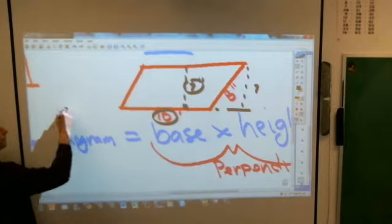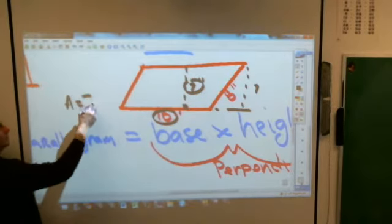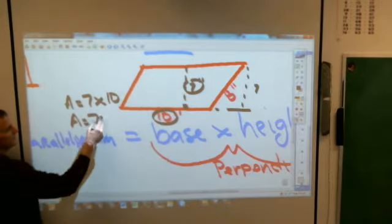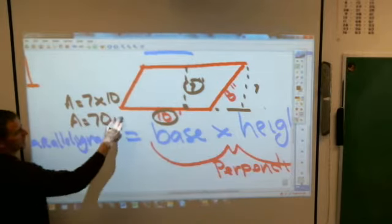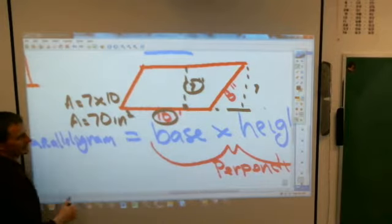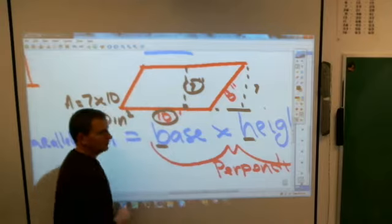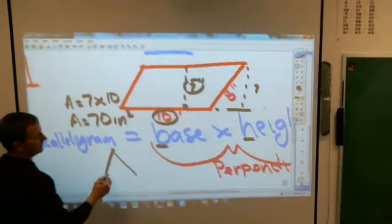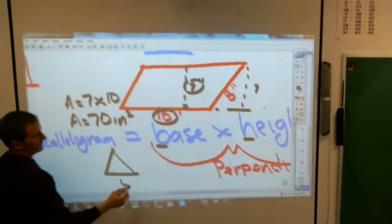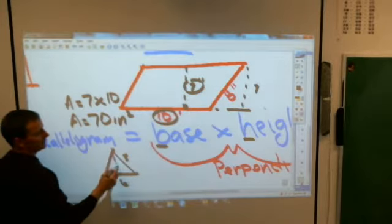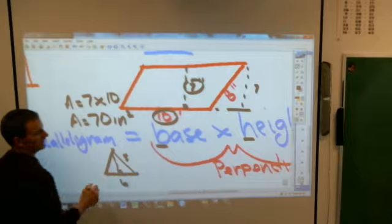The area has to be base and height. Just like when we talked about a triangle, you can't find the triangle if you're only given this as 6 and this as 5. Somewhere they have to give you a dash line and give you a nice right angle.